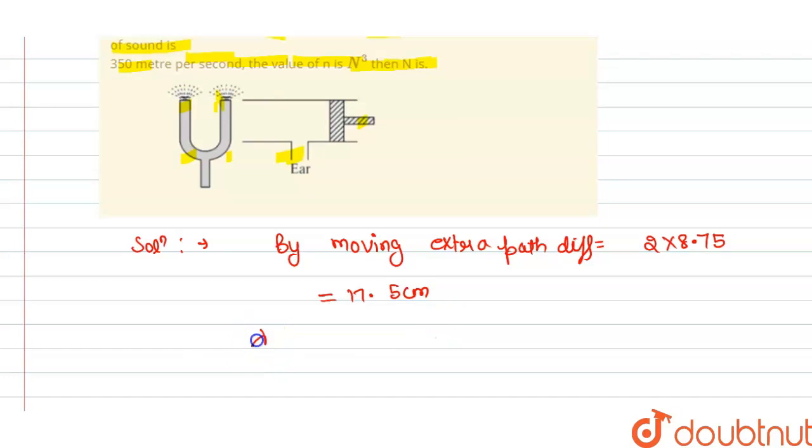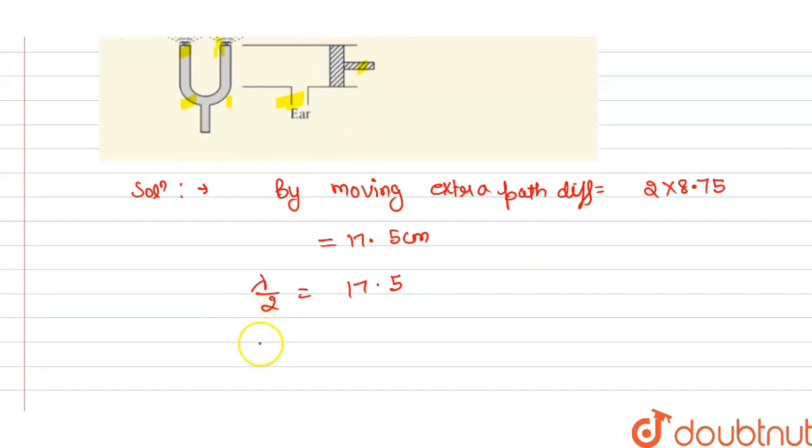And we know that wavelength divided by 2 is equal to extra path, so we can write this is equal to 17.5. From this we can multiply by 2, so we get wavelength lambda is 35 centimeter, or 0.35 meter.